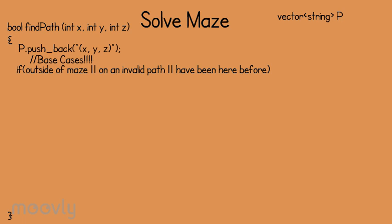In any of these cases, we would want to pop the coordinate that we stored in p off of our vector and return false. And of course, we can't forget that if we've reached the end of the maze, we should return true to indicate that we've found the end of our maze.